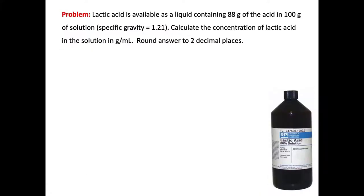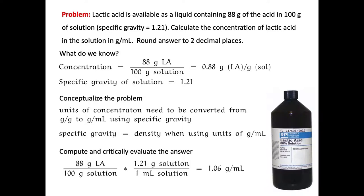Our next problem states that lactic acid is available as a liquid containing 88 grams of lactic acid in 100 grams of solution, and it has a specific gravity of 1.21. Calculate the concentration of lactic acid in this solution expressed in grams per milliliter, rounded to two decimal places. From the question, we know the concentration is 88 grams over 100 grams, which equals 0.88 grams of lactic acid per gram of solution. We also have the specific gravity of 1.21.